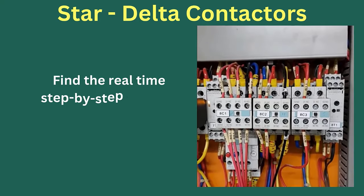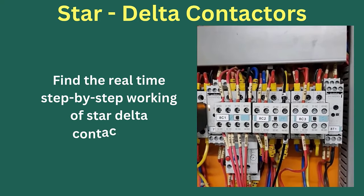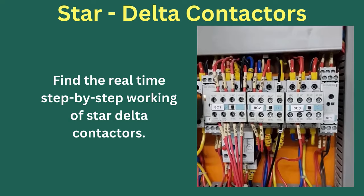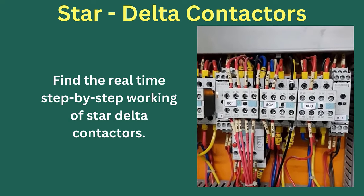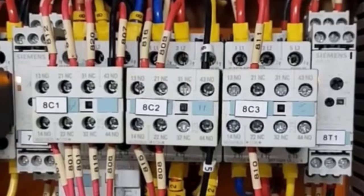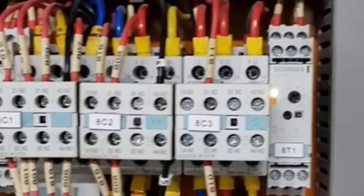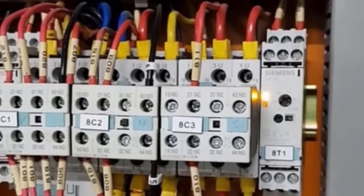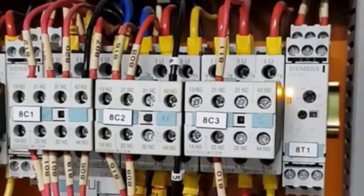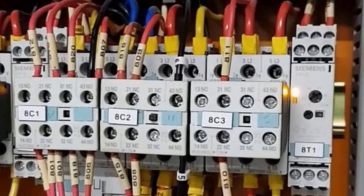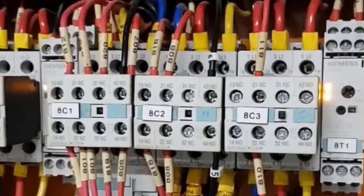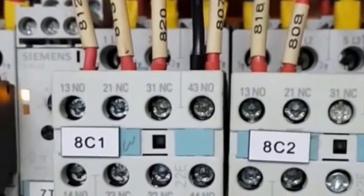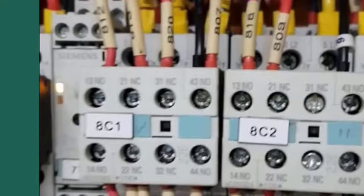Here is the real-time step-by-step working of the star-delta contactors. When power is on, contactors C1 and C3 close and the timer is also energized simultaneously. After a specified time, the timer activates: C2 closes and C3 releases. C1 remains as the permanent contactor throughout the operation.